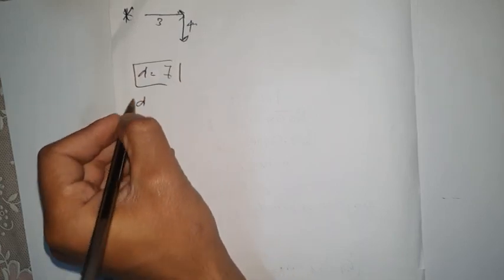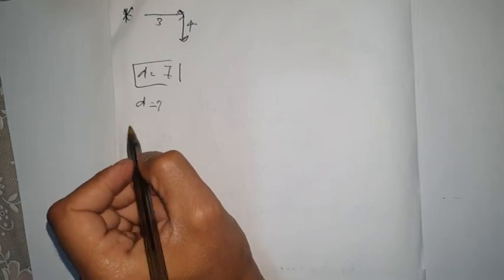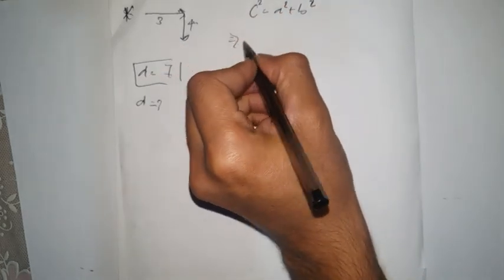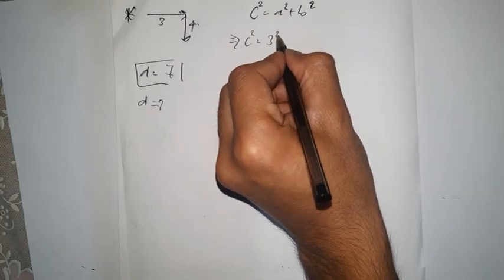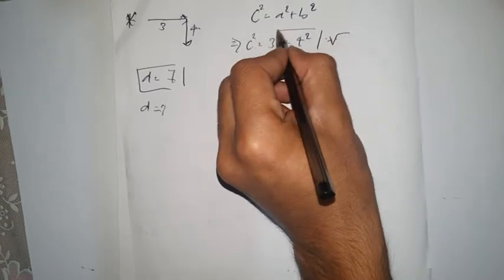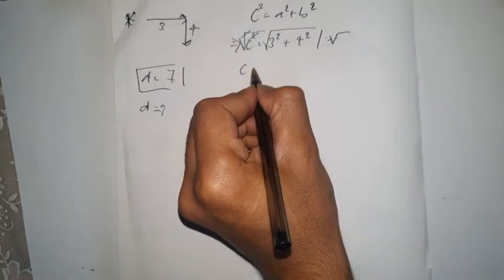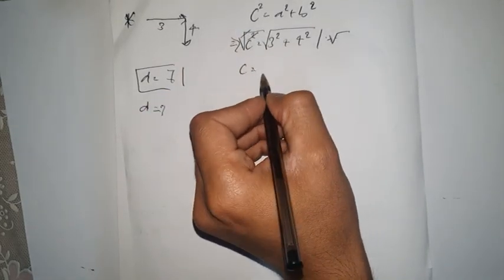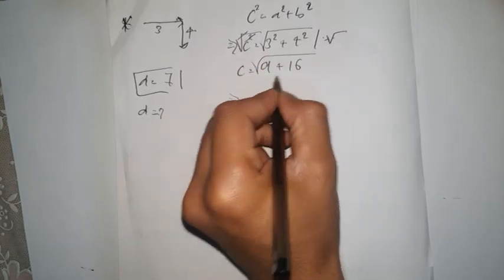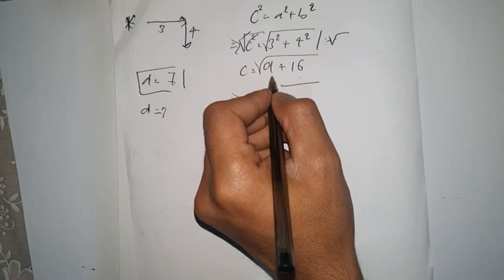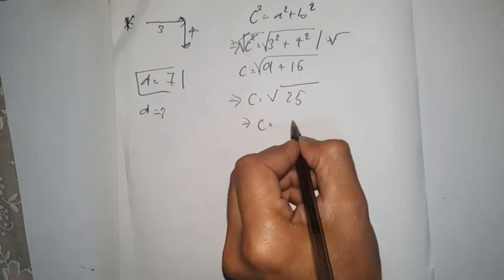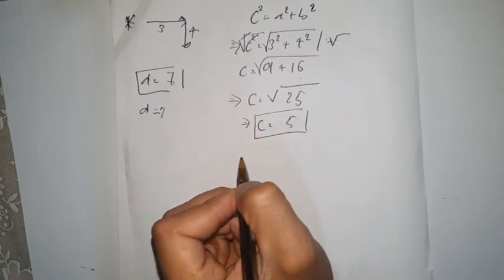To find the displacement, we use the Pythagorean theorem formula: c squared equals a squared plus b squared. For a we put 3 squared, and for b we put 4 squared. So 3 squared is 9 and 4 squared is 16. Adding them: c equals the square root of 16 plus 9, which is the square root of 25 — and that equals 5. That's it for this video.